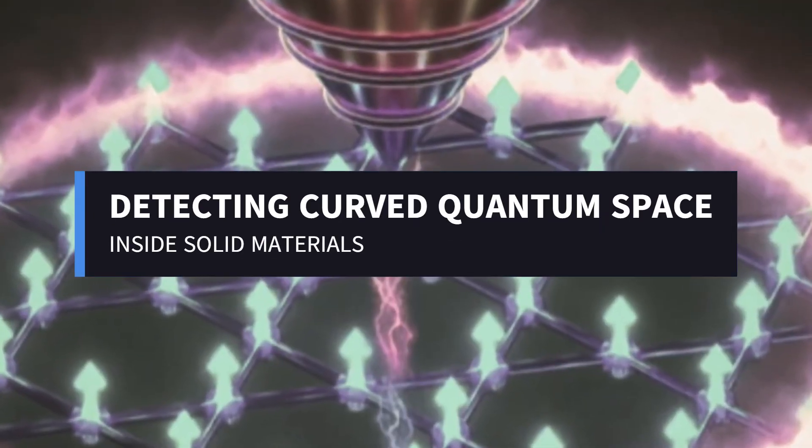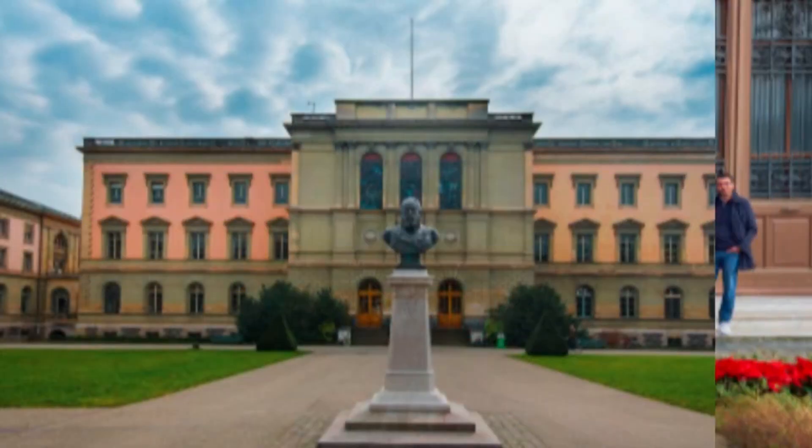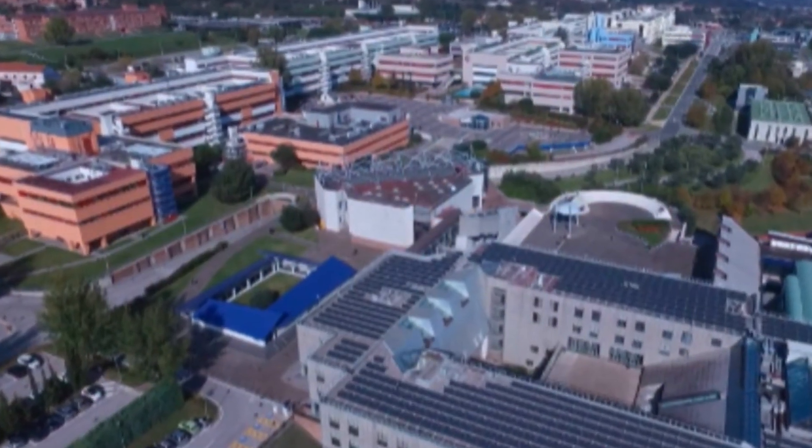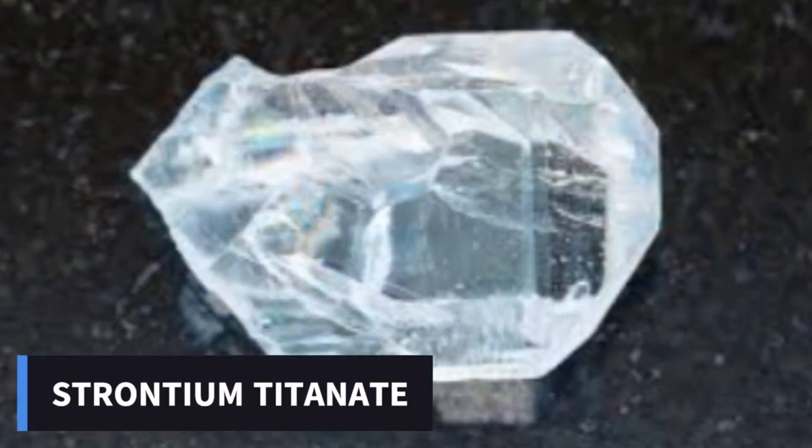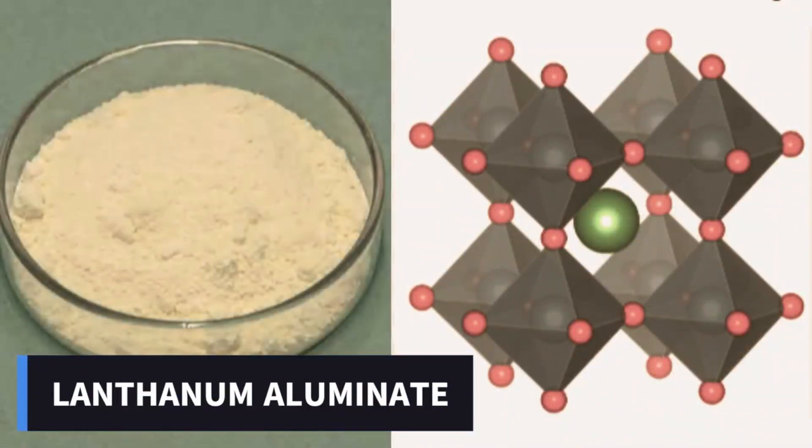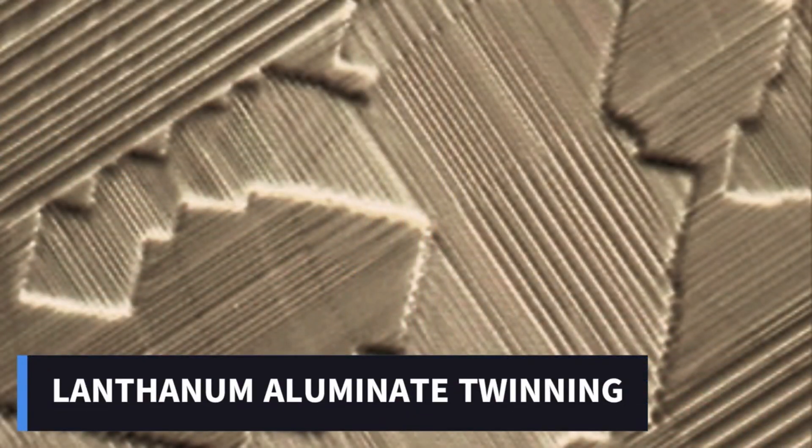That challenge has now been met by researchers from the University of Geneva, working with collaborators from the University of Salerno and the CNR Spin Institute in Italy. Their work focused on a well-known quantum system, the interface between two oxide materials, strontium titanate and lanthanum aluminate. Individually, both materials are electrical insulators. When brought together, however, they form a thin, two-dimensional layer where electrons can move freely. This interface hosts a dense electron gas that exhibits a range of unusual quantum behaviors, making it an ideal platform for exploring subtle geometric effects.